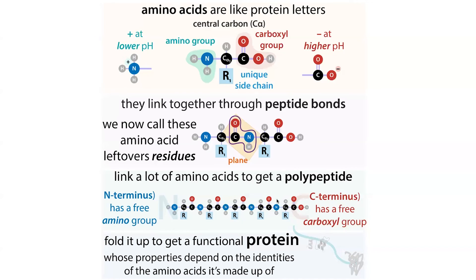So to summarize: residues are what you call them when they're linked up — the remainders, the residual stuff. Amino acids is what you call them when they're free-floating. Often both terms are used interchangeably, but when we're talking about residues in a protein context, what we're really focusing on is the side chains — these R-groups, these unique parts — not the generic backbone that they linked up through. The backbone is the same for all of them, so it's not as interesting in terms of identity, though it does contribute to protein structure. But the unique character of each residue comes from its side chain.